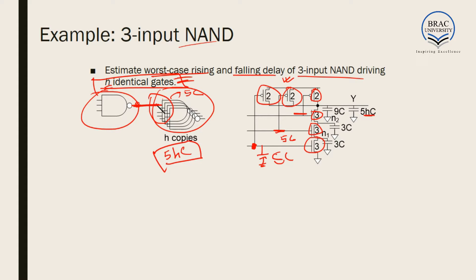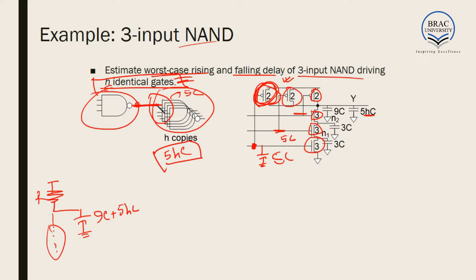This capacitance of 5HC is added to the final output. For the worst-case rising delay scenario, we consider only one MOSFET switched on. The resistance of that MOSFET is R and its capacitance is 9C + 5HC. The resistances on the pull-down side are not required because current flows in the other direction. So the total propagation delay rising (PDR) is R·(9 + 5H)·C.